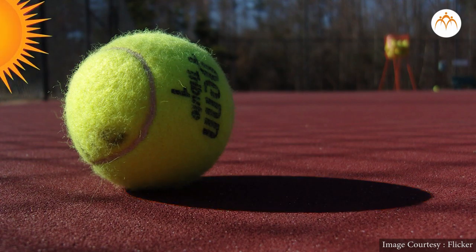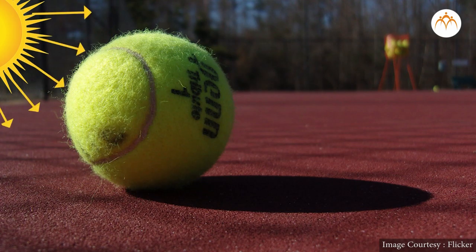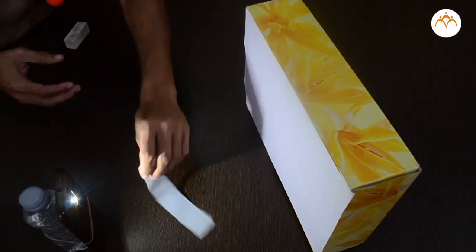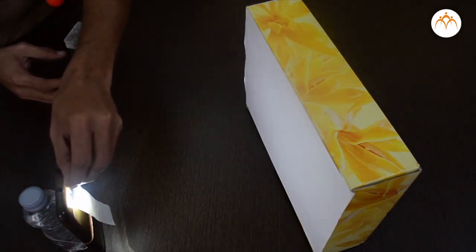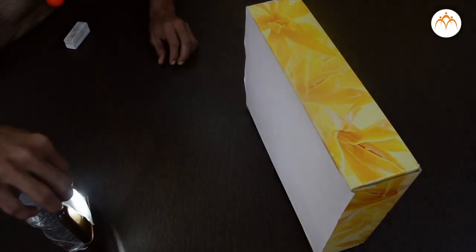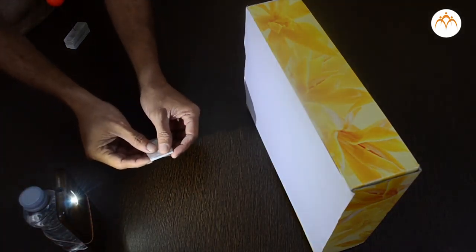Transparent objects cannot form shadows. The nature of the shadow is decided by the intensity of the light source, angle the light is coming from, and surface on which shadow forms.